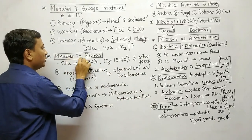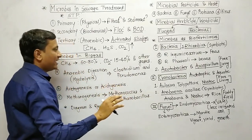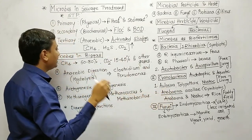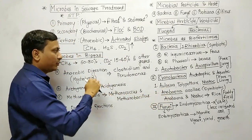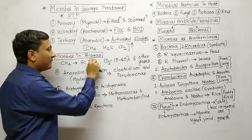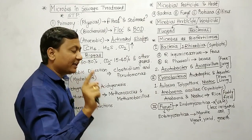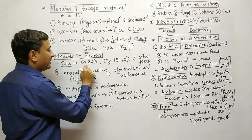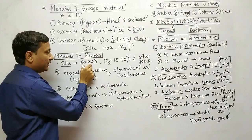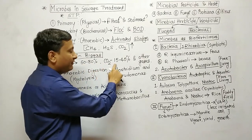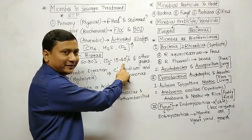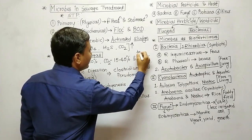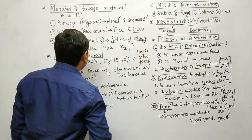The next topic is microbes in biogas production. Biogas is produced using microorganisms. In biogas, methane gas makes up 50 to 80% — learn this range. CO2 percentage is 15 to 45%. Other gases are present in trace amounts.